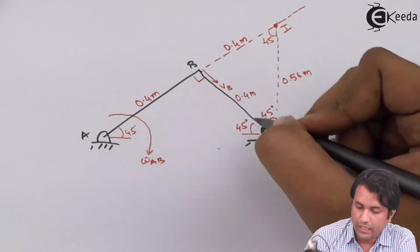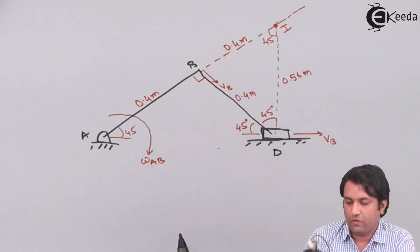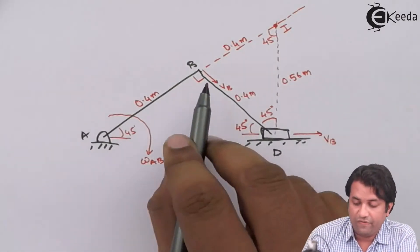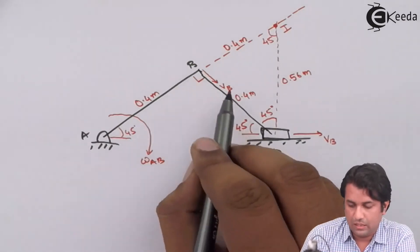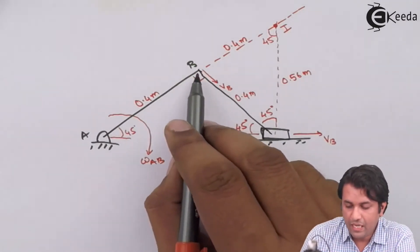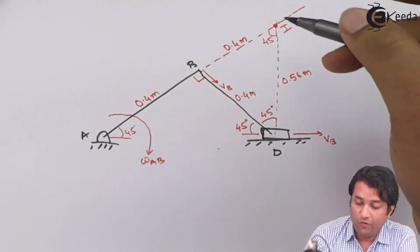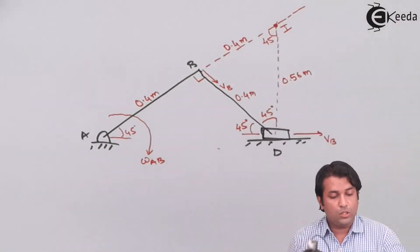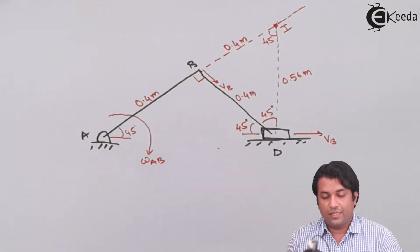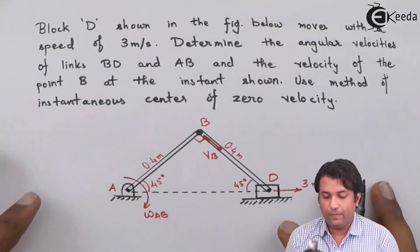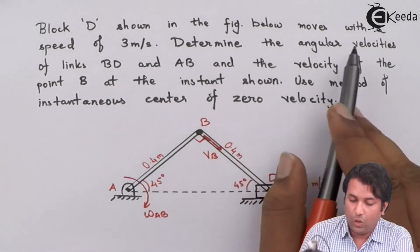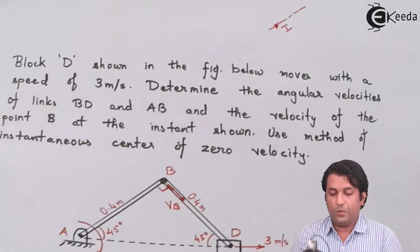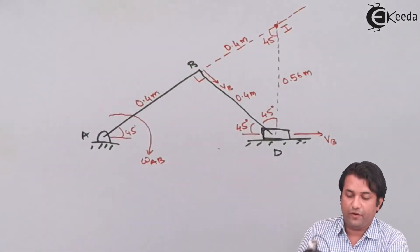This length is also 0.4 meters. Now I need to find the velocity of point B, that is VB, and the angular velocity of rod BD, as well as AB. First, I'll find the angular velocity of link BD.